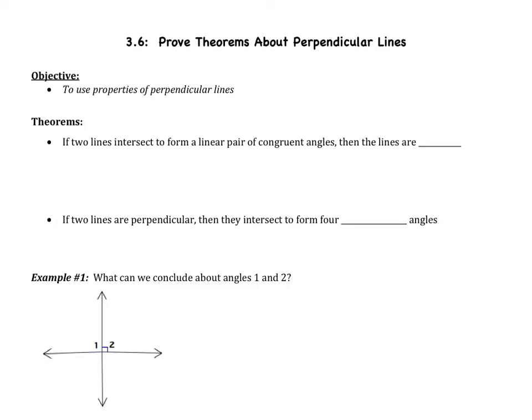The first theorem says if two lines intersect to form a linear pair of congruent angles, then the lines are... Let's draw a picture. Two lines intersect, and they form a linear pair of congruent angles — so here would be my congruent angles. A linear pair always adds to be 180, so if I have two congruent angles that add to 180, both angles have to be 90. If those two angles are 90, then the lines are perpendicular.